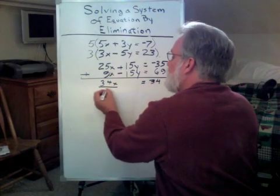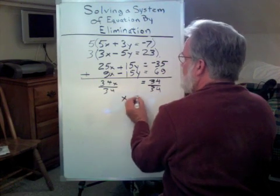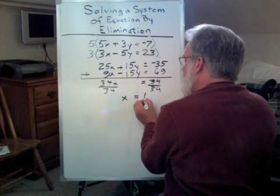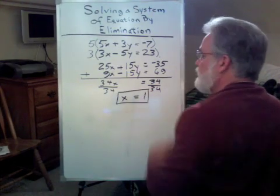We divide both sides of the equation by 34, and we have that x equals 1. So, there's part 1 finished. x equals 1.